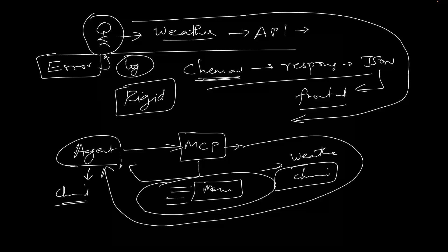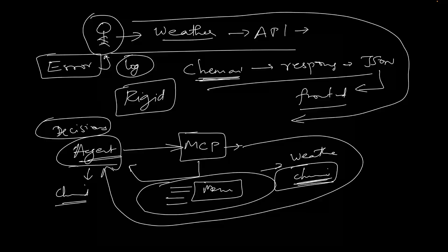Next, if there is no data from the agent, MCP Server can handle that without any weather data issues. If we need to switch from one agent to another, we can convert between agents. We eliminate rigid code — a traditional approach will be different from an MCP Server approach.